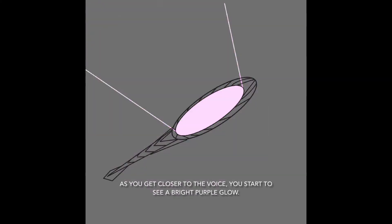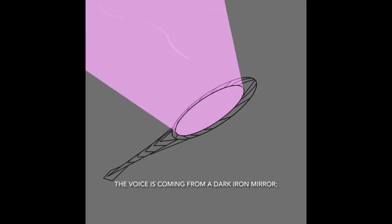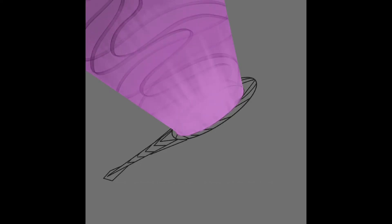As you get closer to the voice, you start to see a bright purple glow. The voice is coming from a dark iron mirror. Its design is jagged and rigid.